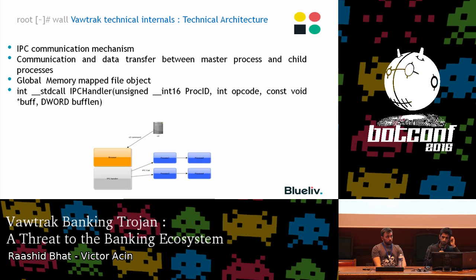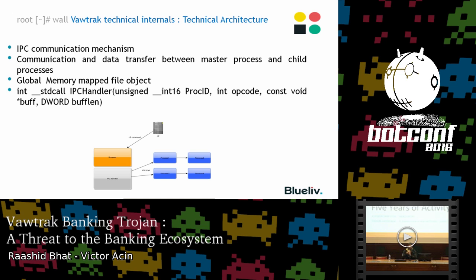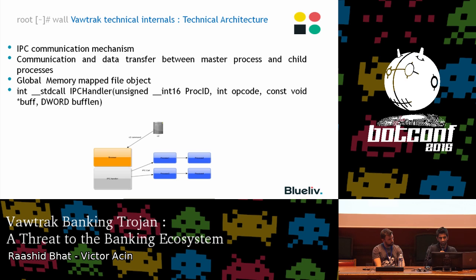Vawtrak also has an IPC mechanism. Some calls received from command and control servers need to be executed across different processes. For that purpose, it has an IPC mechanism to communicate between many different instances of Vawtrak running in different processes, using a global memory-mapped file object as a communication medium. The base process from which all calls originate is explorer.exe. In C representation, the handler consists of the process ID from which the call was made, the opcode, the parameters, and the length of the parameter.